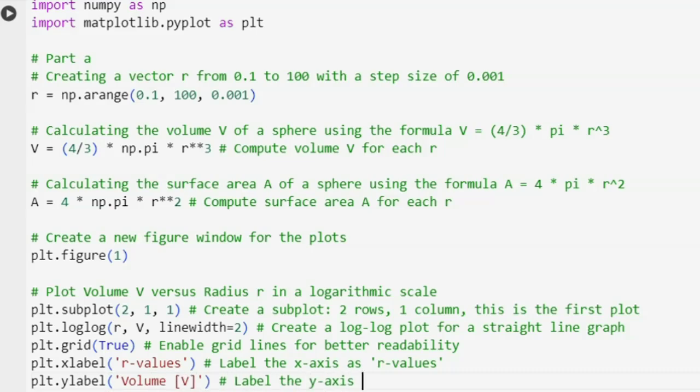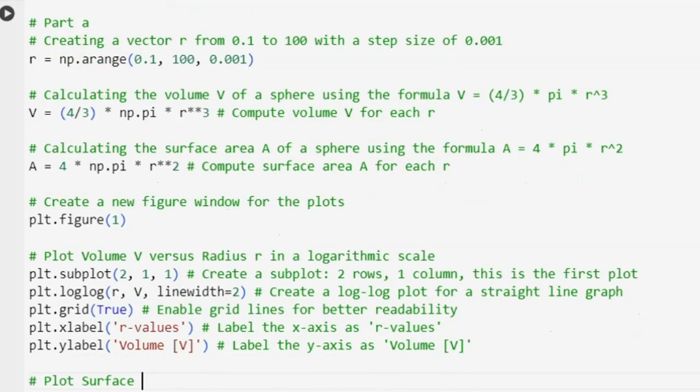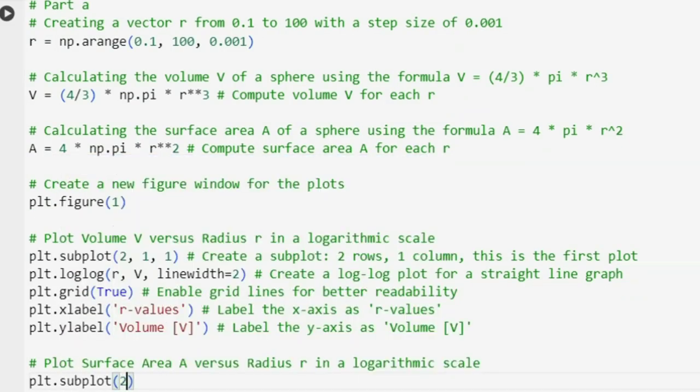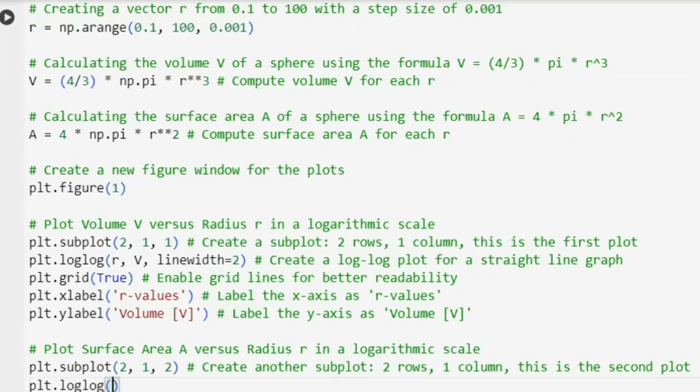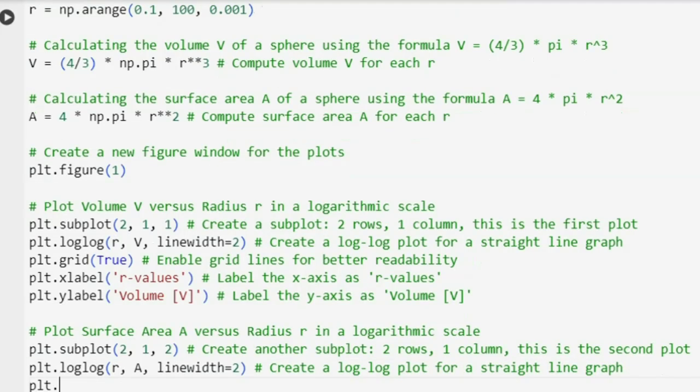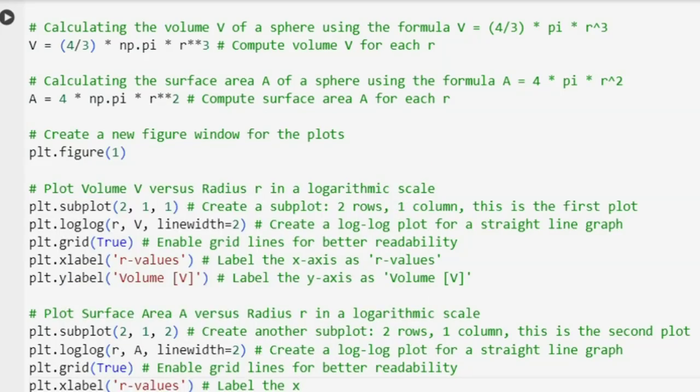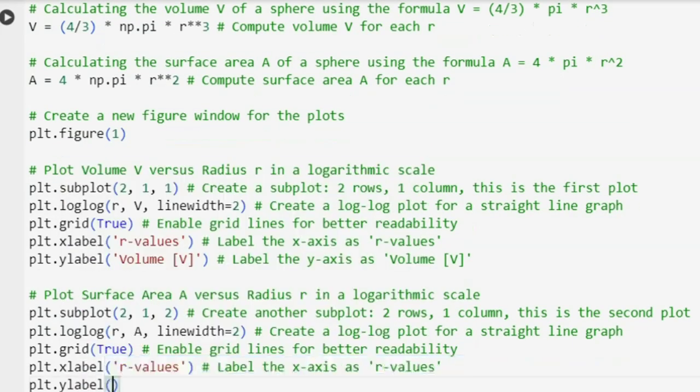Now we will plot the surface area in the next section of the subplot figure. Subplot 2, 1, 2 will select the second section of the figure that is split into 2 rows and 1 column. The log log plot of radius versus surface area is plotted with the line width of 2. Again, setting the grid to true in order to make the grid lines visible on the graph. Setting the label for the horizontal axis. Similarly, we plot surface area A against radius R. Let's run the code to see resulted graph.